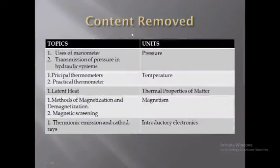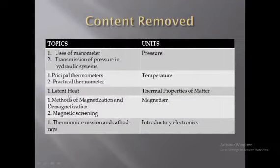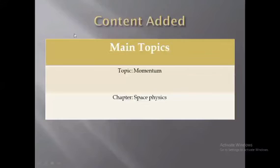Let's see what contents have been removed from syllabus 5054. From the pressure unit, uses of manometer and transmission of pressure in hydraulic systems are removed. From the temperature chapter, the principle thermometer and practical thermometer are removed. From thermal properties of matter, latent heat is removed. From magnetism, methods of magnetization and demagnetization, and magnetic screening are removed. From introductory electronics, thermionic emission, cathode rays, and logic gates are also removed. Content that has been added includes the topic of momentum and the new section on space physics.